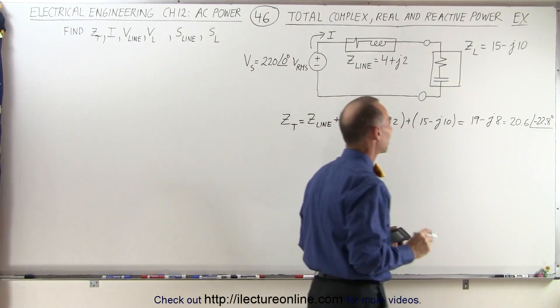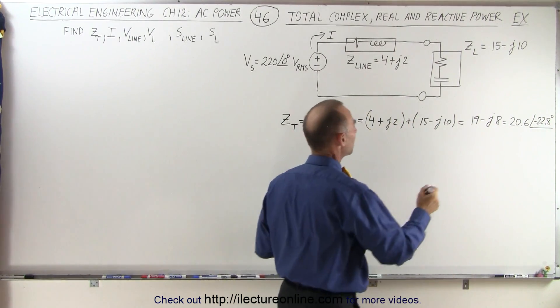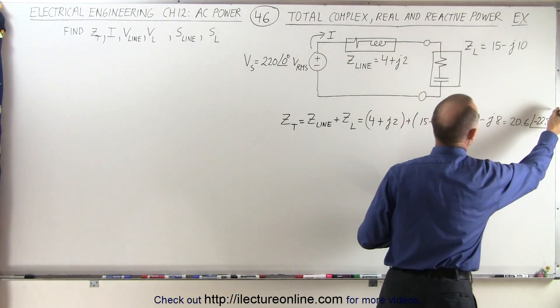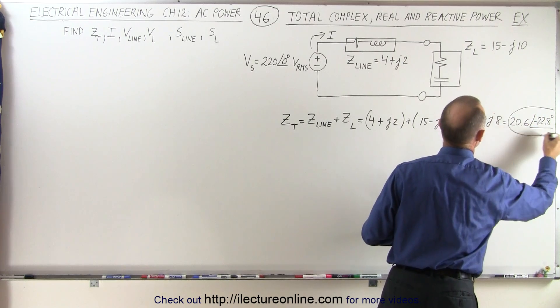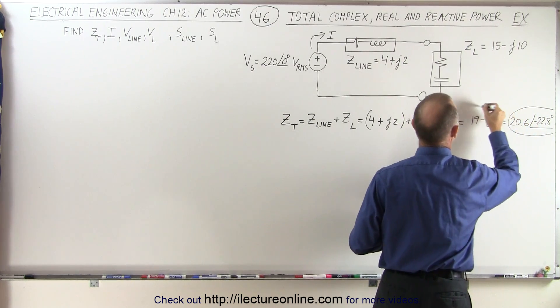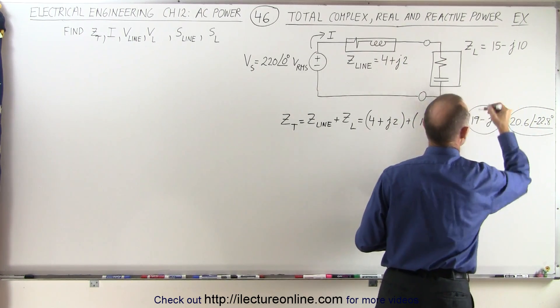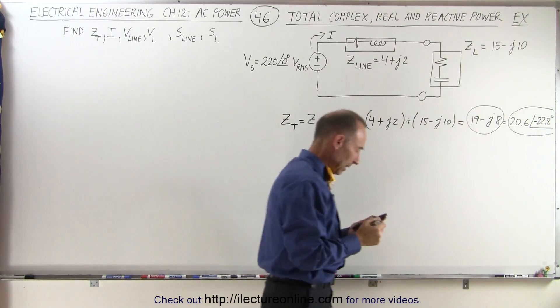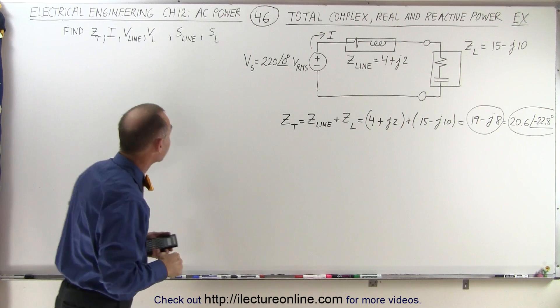So the total impedance is 20.6 at negative 22.8 degrees, depending upon what format you want it in, for that particular circuit.